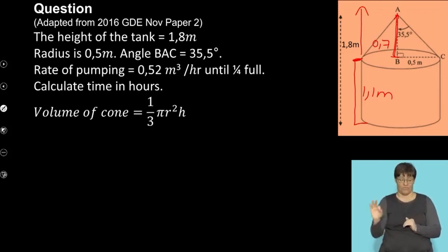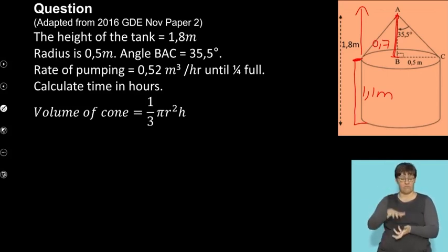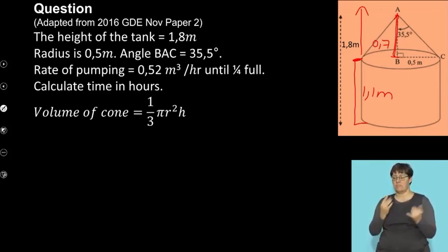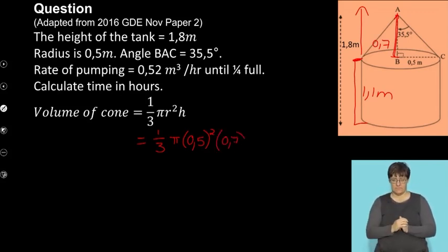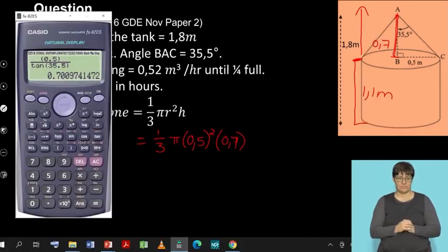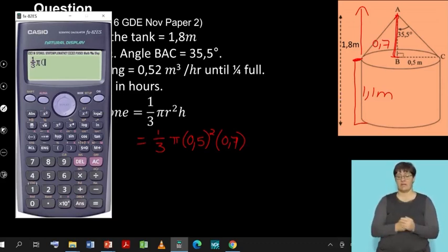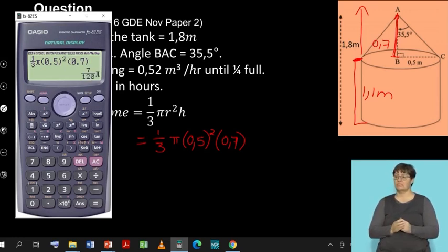I first need to calculate the volume of the cone. The volume of a cone is one-third × π × r² × h. Substituting: one-third × π × (0.5)² × 0.7. Plugging this into the calculator gives an answer of 0.18 meters cubed.